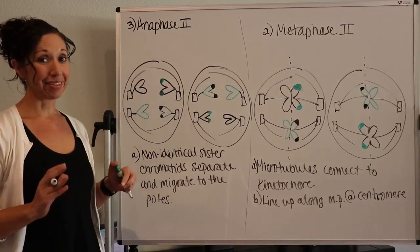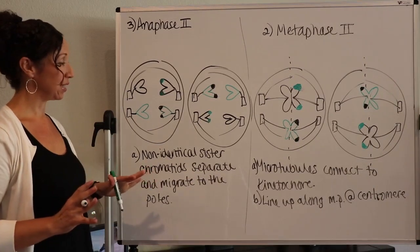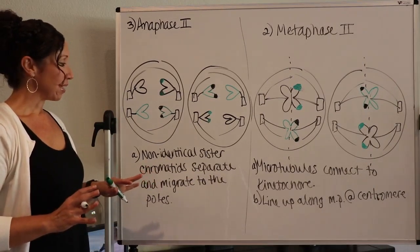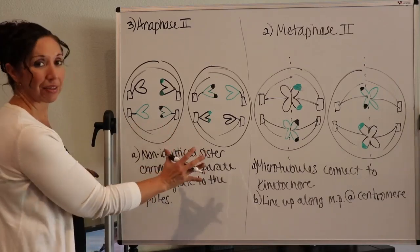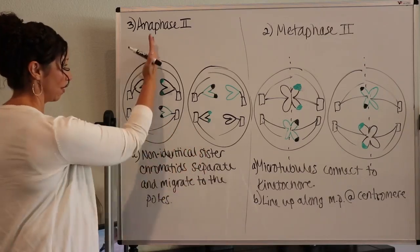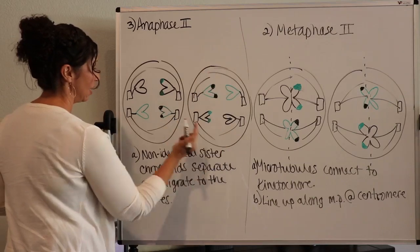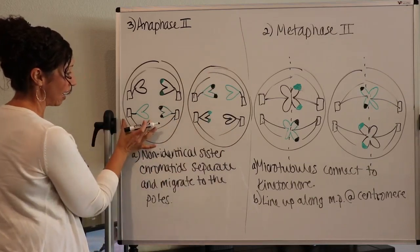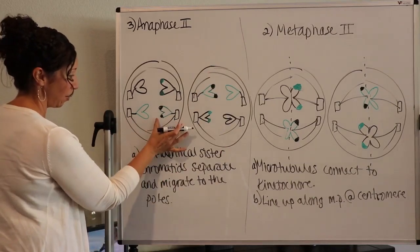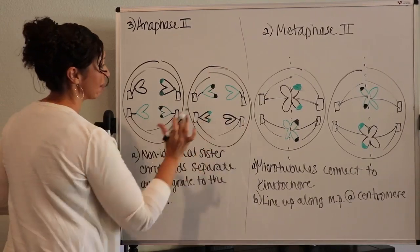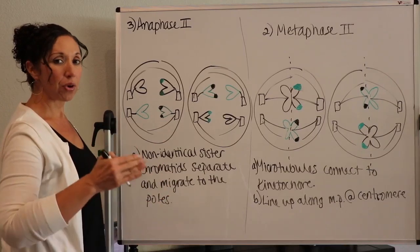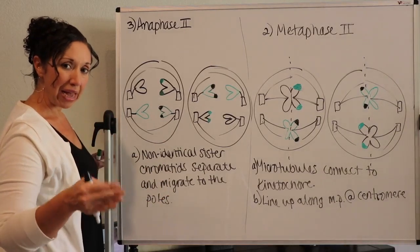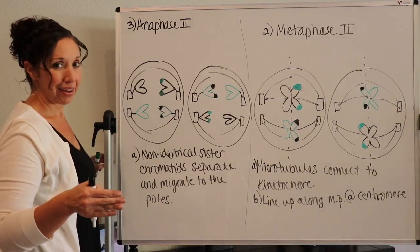And this is our final step of meiosis II. This is where it gets really exciting. You can see where we're going to have four new cells develop from this. We're going to split it here, and we're going to split it here. One new cell is going to have these two chromosomes. Another one is going to have these, and these, and these. And you could see, even from this picture alone, how all four new cells that get made are not identical.